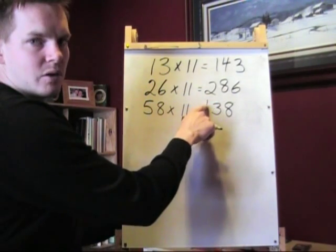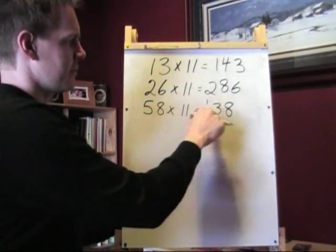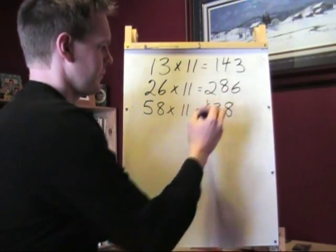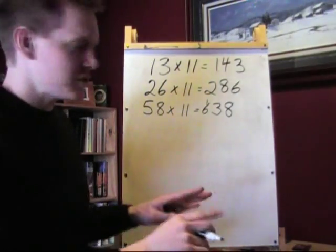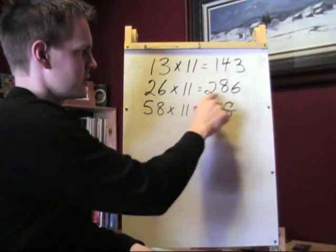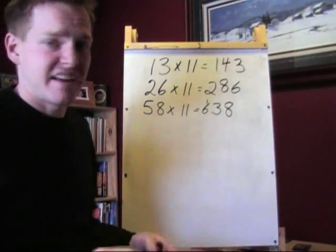And you see how I carried the 1. That's very important. We have to make sure to carry that 1. And then, you add 5 plus the 1. So, the only case where you won't just split up these two numbers and put them on either side is when you have a sum that's greater than 10.